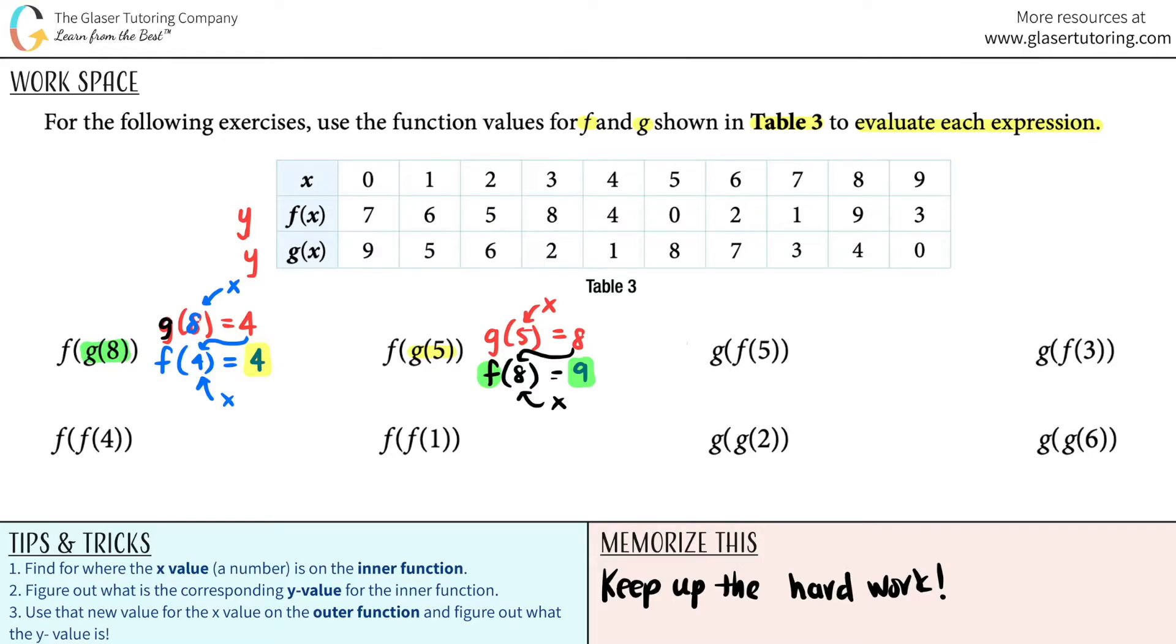Next one, g of f of 5. Inner function is f of 5. The 5 is the x. So the 5 is, if we're going to the f, it is right here. Sorry, if we're going to the x, it's 5 right here. Now we got to look at the f graph. So just follow down the f graph, 0.